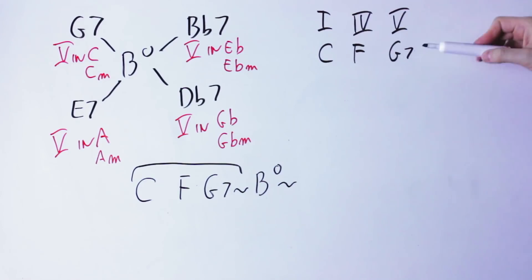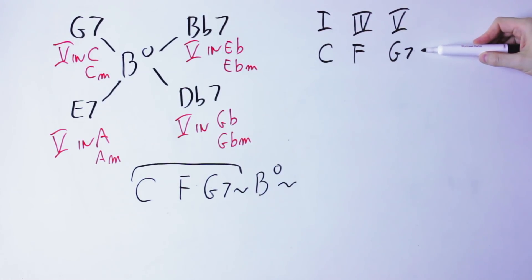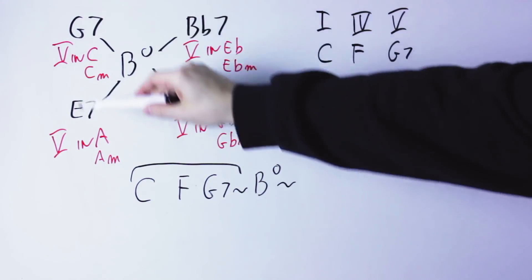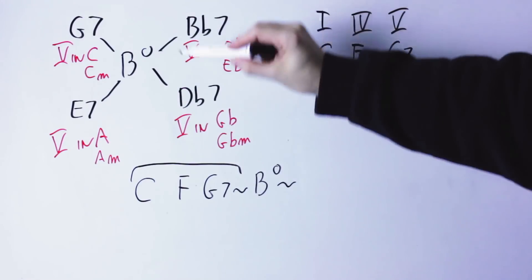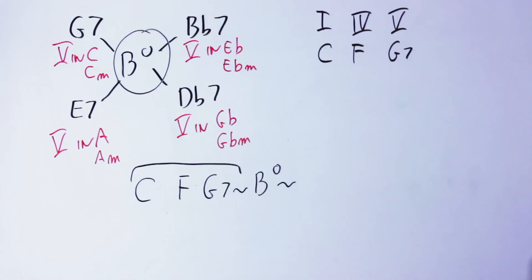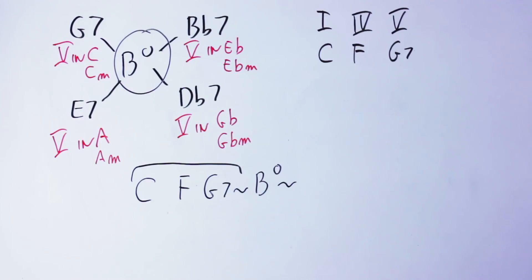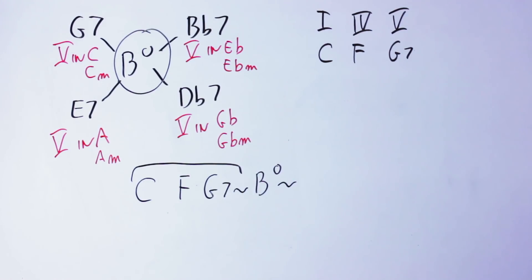So you see, we took a very simple chord progression — a 1-4-5 in different keys — and we connected those keys smoothly using a diminished chord. This is just one example of the many things you can do with these amazing diminished chords. They really can do a lot of things; they can solve many problems that no other chord can solve.